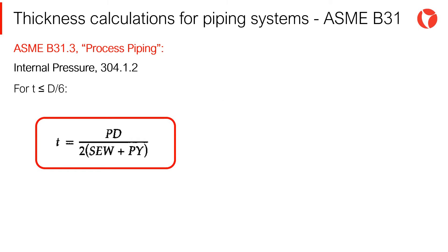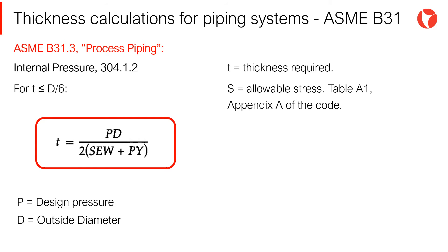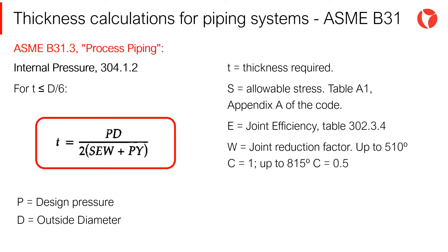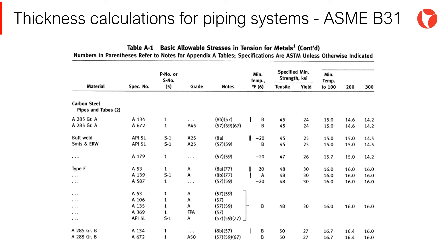In accordance with the ASME B31-3 code, the thickness required for straight sections of pipes under internal pressure is given by the following equation, where the required thickness T is equal to the following: P, the pressure; D, the outside diameter of the pipe; S, the allowable stress; E, the joint efficiency; W, the joint reduction factor; and Y, the temperature coefficient. The table shown on the screen lists the different piping materials and their corresponding mechanical properties, where the code includes the safety factors for each material based on experience and results obtained.